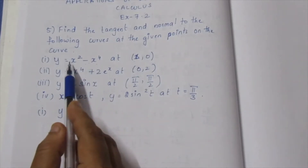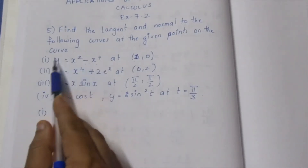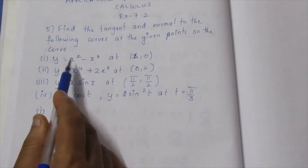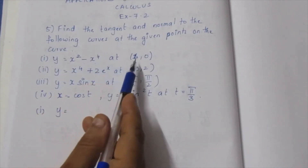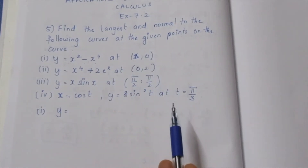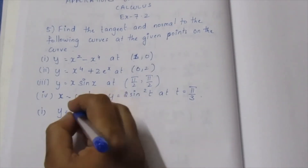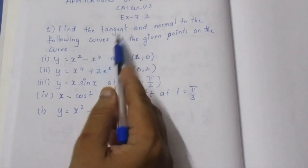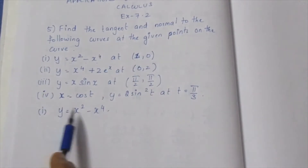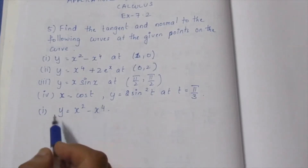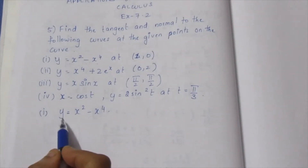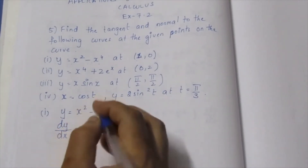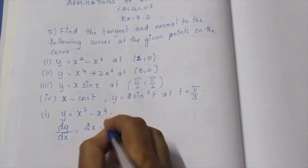What do we know about a curve? If you have a curve, you can find the slope. If you have an equation of a tangent, it will be easier to take the equation of a tangent. The slope is dy by dx. So dy by dx means taking the differentiation with respect to x. If you have a curve, we will take the equation of a tangent — so 2x minus 4x³.